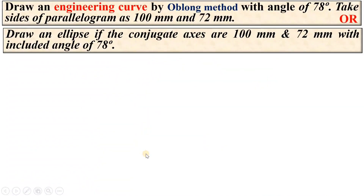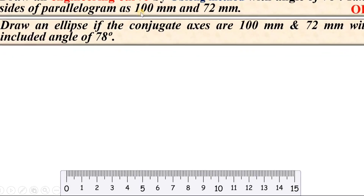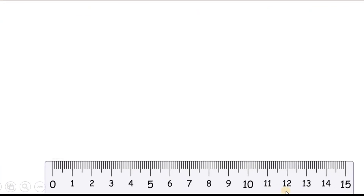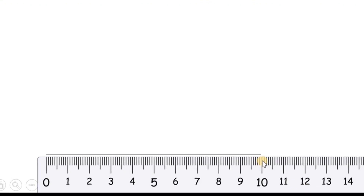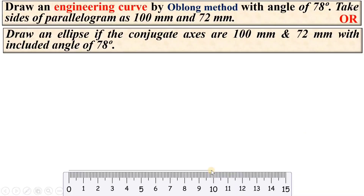First of all, take the scale and draw the horizontal line that is given to you as 100 mm. That is one of the sides of the parallelogram, as mentioned. Here you can see exactly 100 mm.